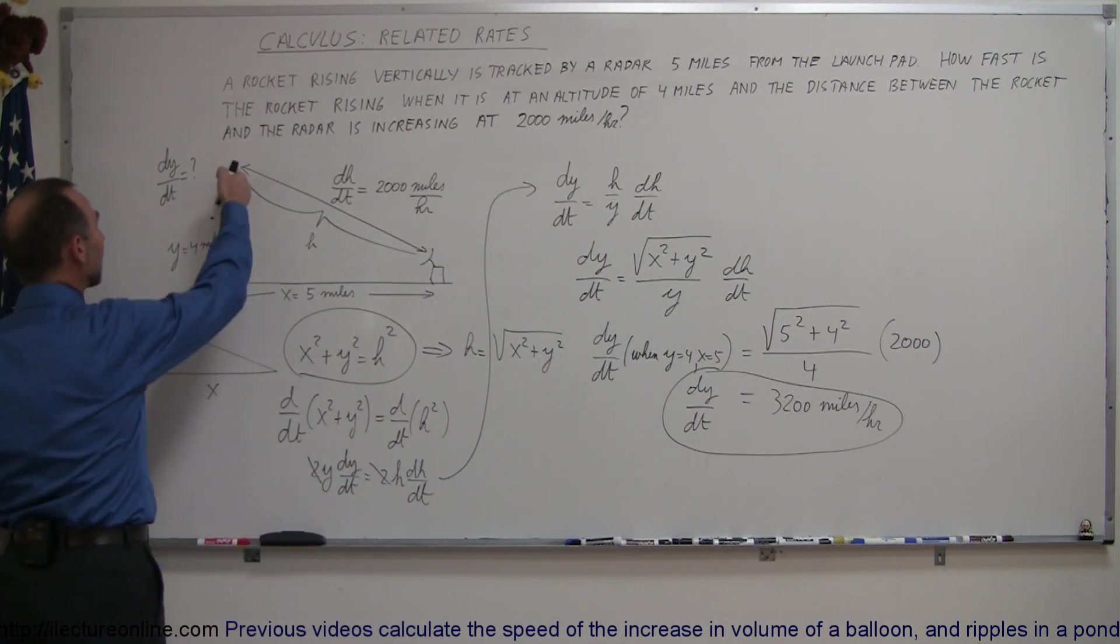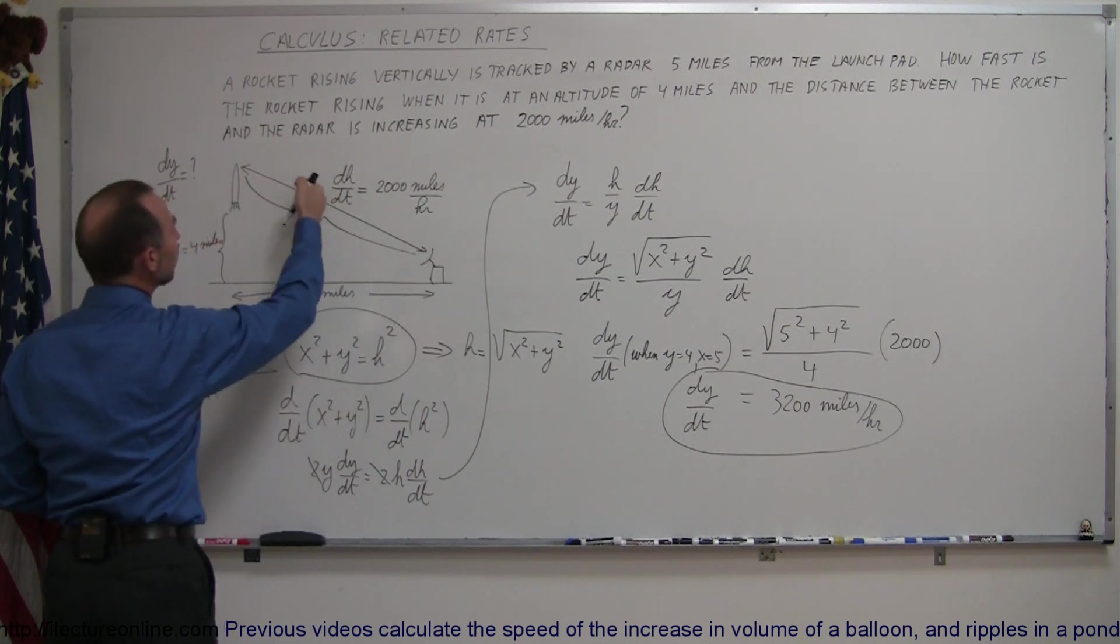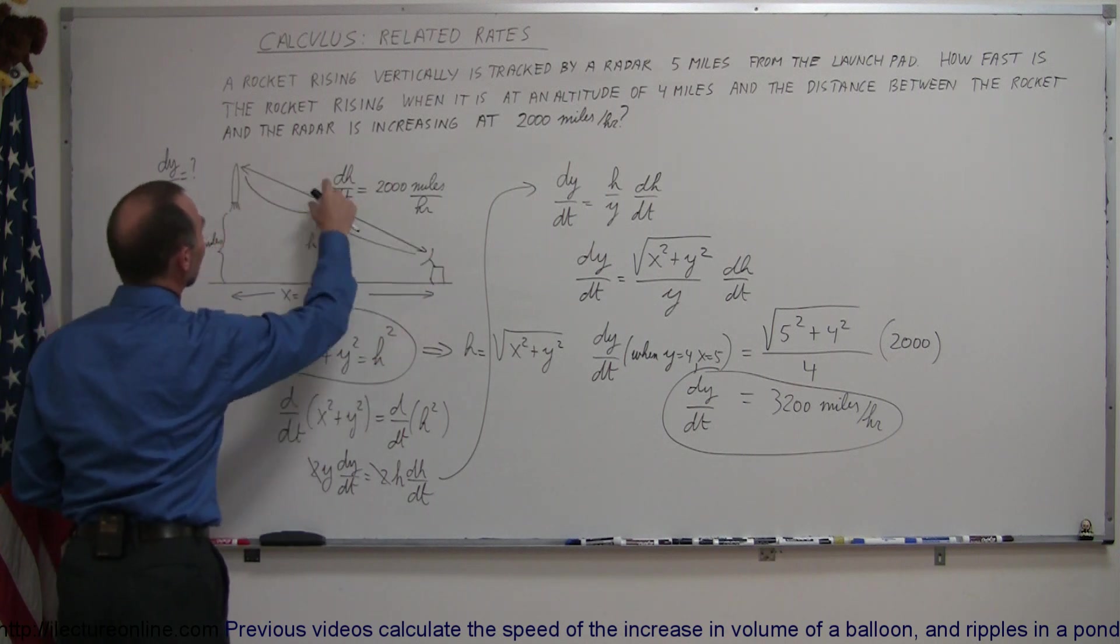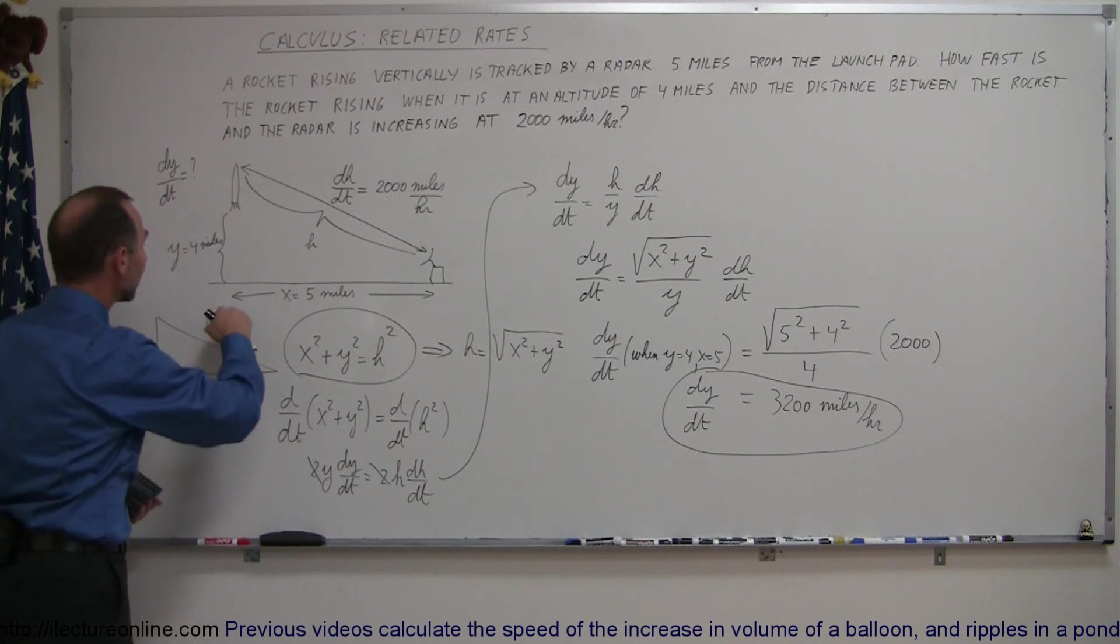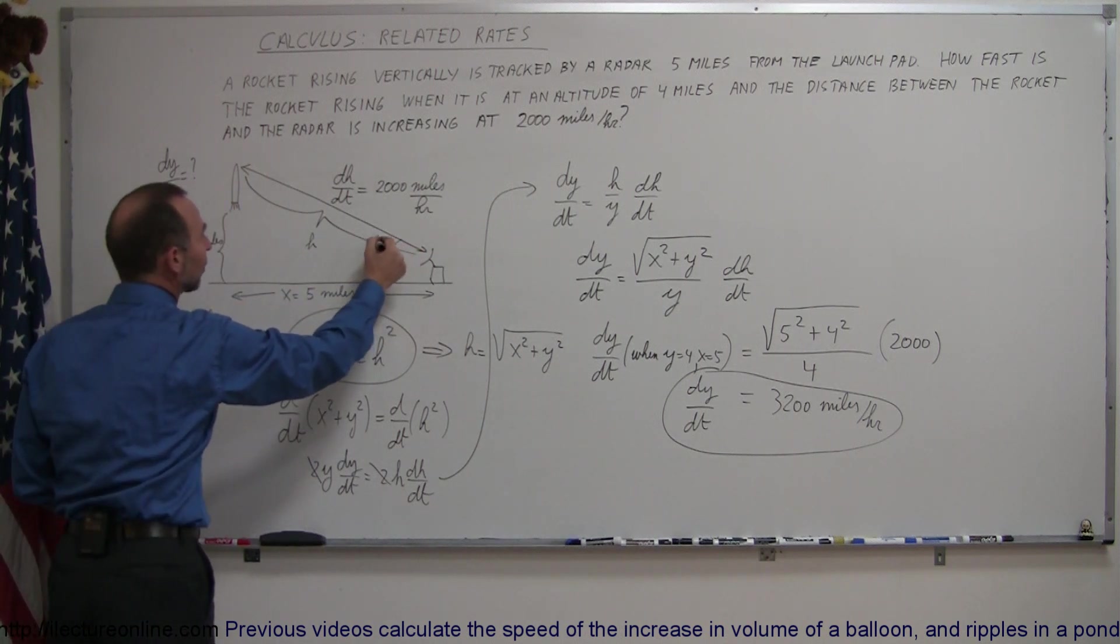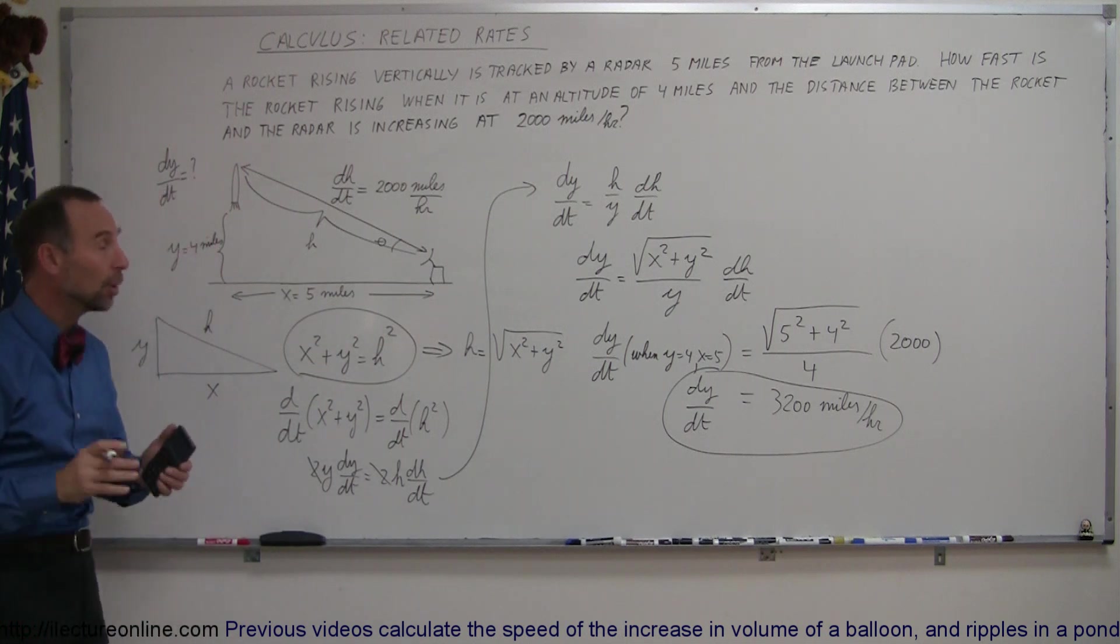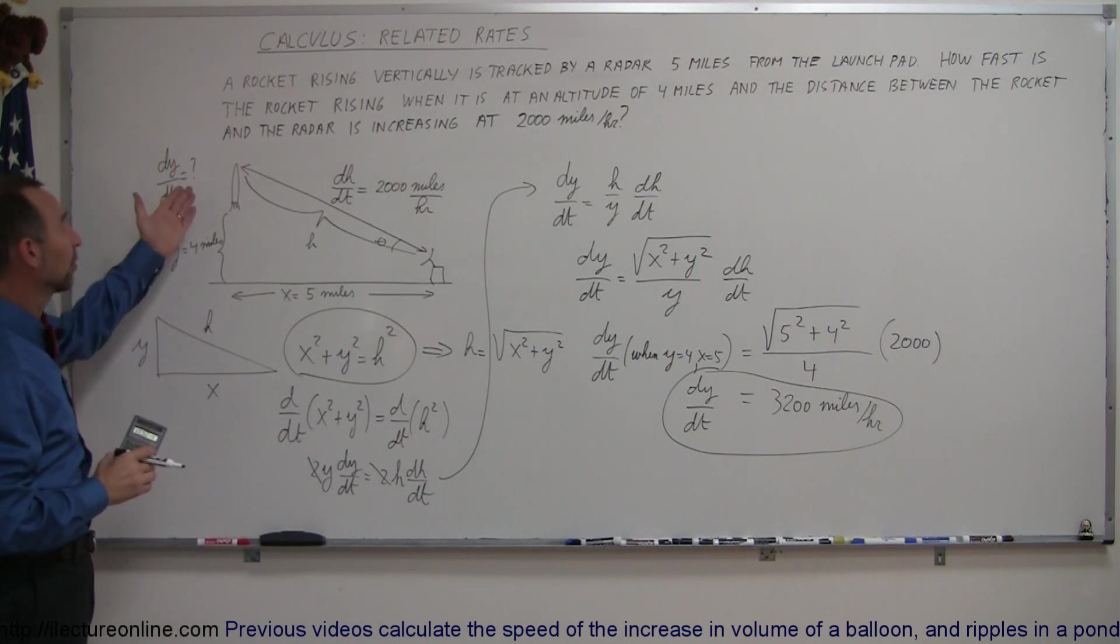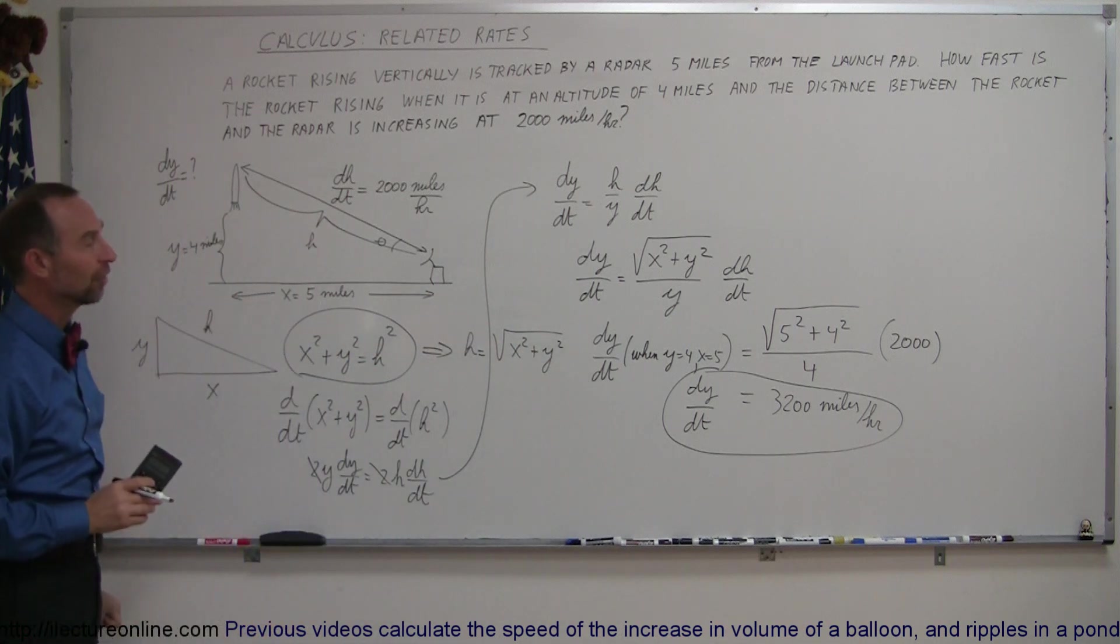Imagine that there's a rocket taking off. You have a radar station 5 miles away. The radar station can measure the change in the distance between the radar and the rocket, which it was measured to be 2,000 miles per hour, knowing that the rocket is at a height of 4 miles, because we can probably figure out what the angle is here, knowing how far away it is. We know how high the rocket is, and we want to know at that moment how fast the rocket is moving, and of course, that's the equation that allows us to do that.